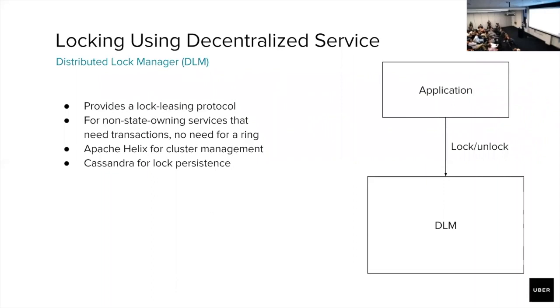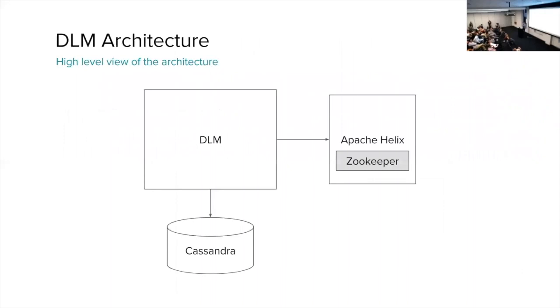I'm going to give a really high-level overview of what DLM's architecture looks like. This is the three major components: the application layer, DLM, the cluster management, we use Apache Helix, and Cassandra, which is our state persistence layer. DLM uses Cassandra's compare and set writes to consistently write those lock states.